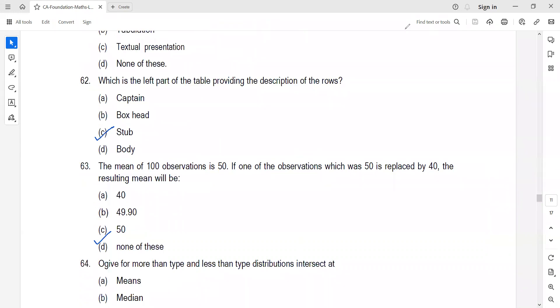Question 63: The mean of 100 observations is 50. If one observation which was 50 is replaced by 40, the resulting mean will be what? We know mean is a single value that represents the entire set of observations. A change in one observation causes a change in mean. Mean is dependent on change of origin and scale.